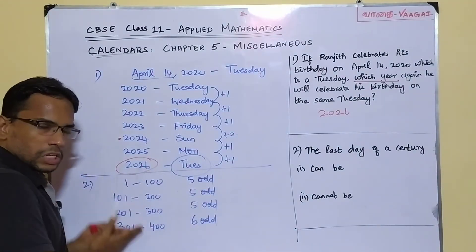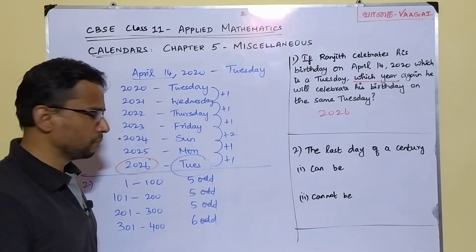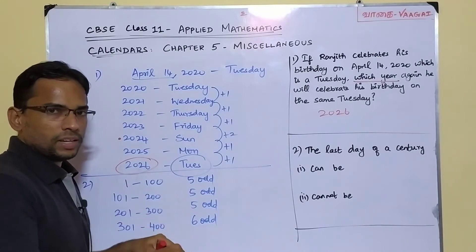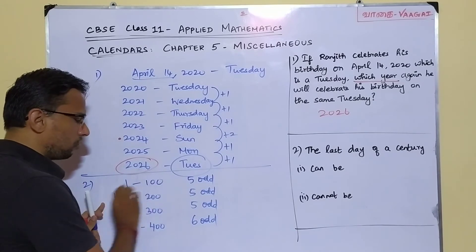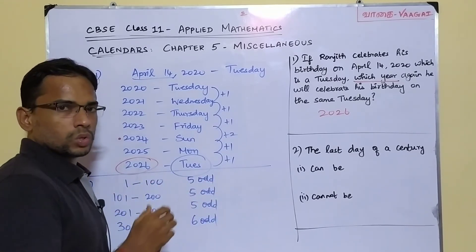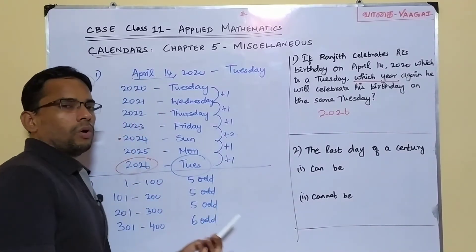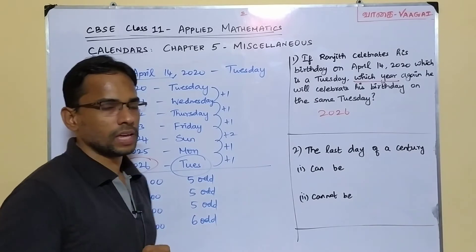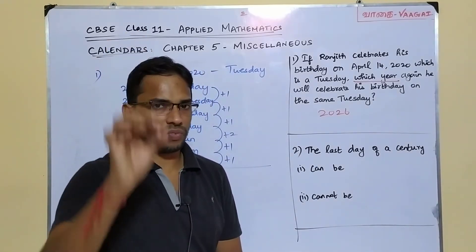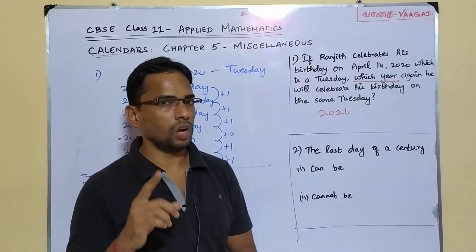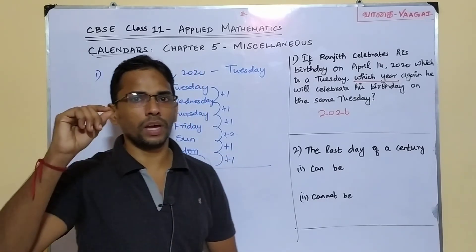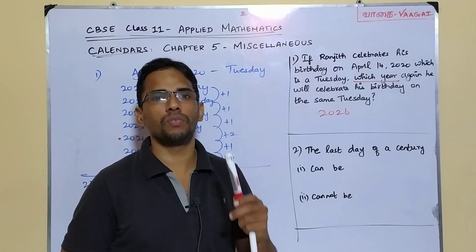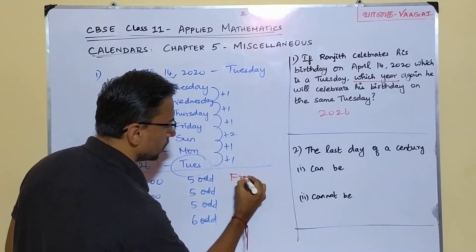For every century, I have noted the number of odd days. These odd days correspond to the last day of each century. The day cycle always starts from Monday. So: 1 odd day = Monday, 2 = Tuesday, 3 = Wednesday, 4 = Thursday, 5 = Friday. The first century has 5 odd days, so the last day of the first century is a Friday.